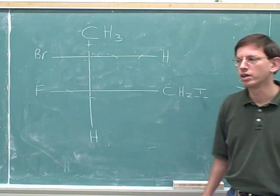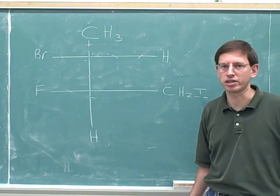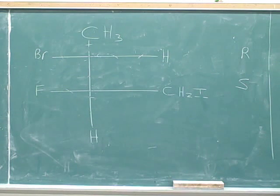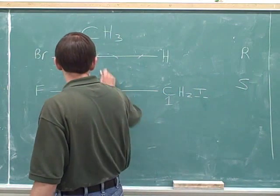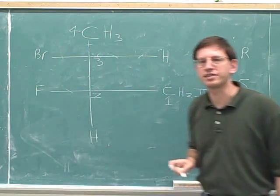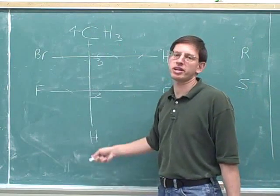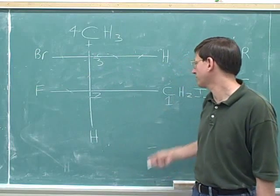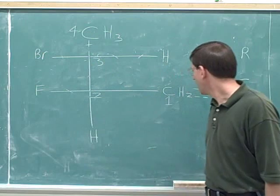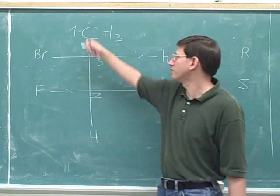We've determined that the top stereocenter has an R configuration and the bottom stereocenter has an S configuration. Now I'd like to write out the full complete IUPAC name for this molecule — try pausing the video to see if you can do it. You've got to start by finding the longest carbon chain and numbering it: carbon 1, 2, 3, and 4. That's the longest chain. Here's a trap — a bunch of people might not realize that this fourth carbon can be part of the parent chain. There's no rule that the parent chain has to be entirely on the vertical of the Fischer projection; it's perfectly okay for the parent chain to move horizontally.